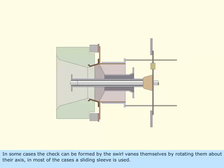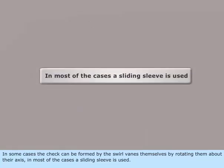In some cases, the check can be formed by the swirl vanes themselves by rotating them about their axis. In most of the cases, a sliding sleeve is used.